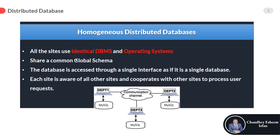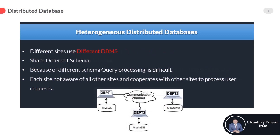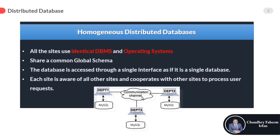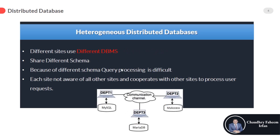In homogeneous systems, we use identical DBMS on all the network nodes, which makes it easy to handle. Now here is the second type — heterogeneous distributed databases. In this system, data can be accessed and modified simultaneously on several databases in the network. Here are the few properties of heterogeneous distributed databases: different sites use different DBMS.